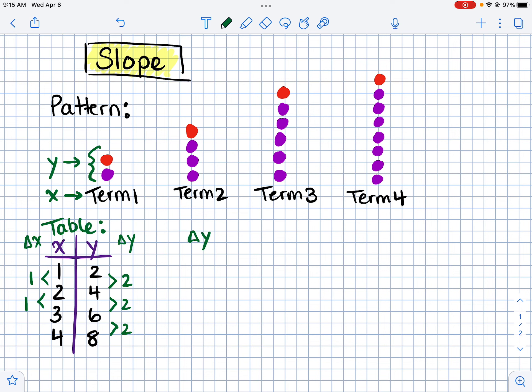And then the change in x is, it's going up by one every single time. So if we're finding the rate of change, we look at the change in y over the change in x. So we can see that the rate of change is two over one, or just two.